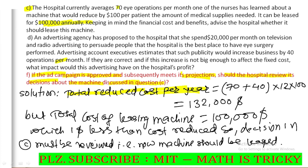Here we have 70 operations per month, and if we add 40 more operations, that gives 70 plus 40 operations per month. Over 12 months per year, with a reduction of $100 per patient, the total annual reduction becomes 110 times 12 times 100, giving a total reduction of $132,000 per year.